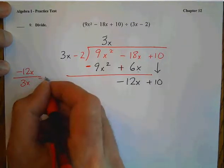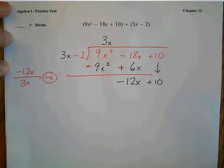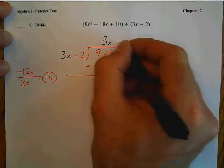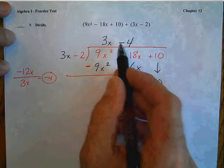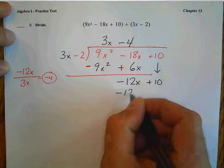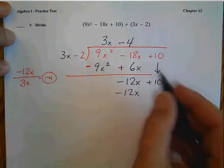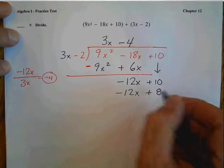If you wanted to think about that as a division problem, you could over here on the side. That equals negative 4. So we put minus 4 up top and multiply it times the 3x to get negative 12x and times the minus 2 to get positive 8.